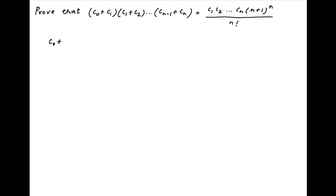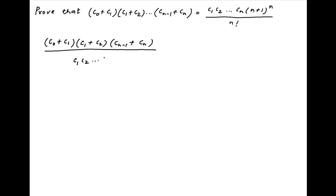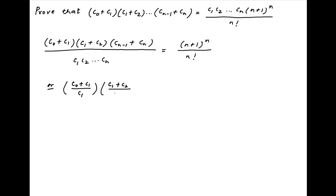The given equation in the problem statement can be written as c0 plus c1 times c1 plus c2 and so on till cn minus 1 plus cn, divided by the product of c1, c2 and so on till cn, is equal to n plus 1 raised to the power n divided by n factorial. This can also be written as c0 plus c1 upon c1 times c1 plus c2 upon c2 and so on till cn minus 1 plus cn upon cn, equal to n plus 1 raised to the power n upon n factorial.